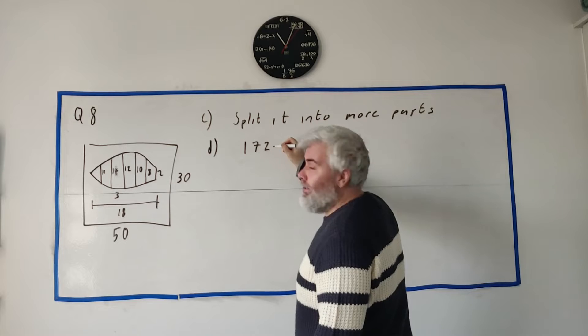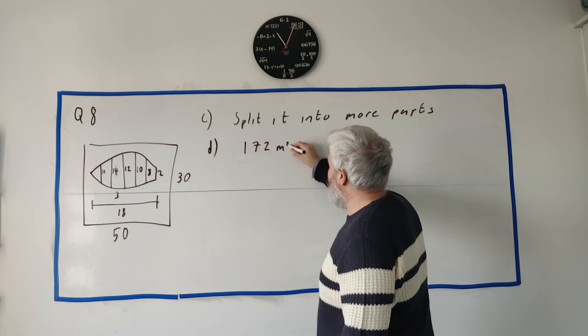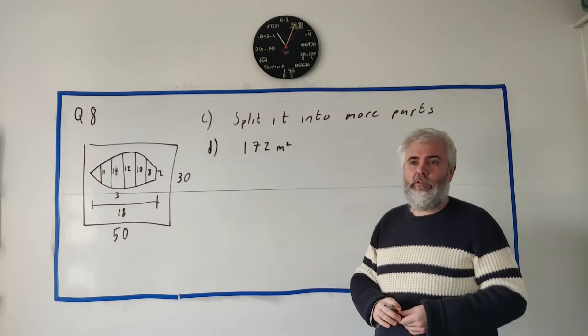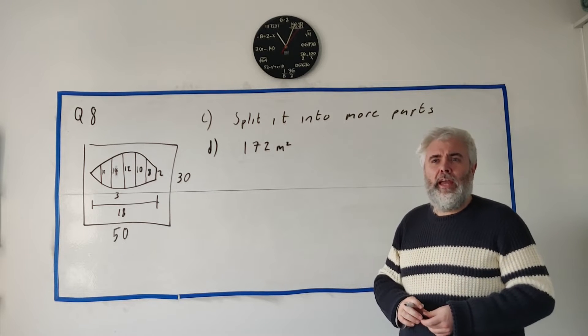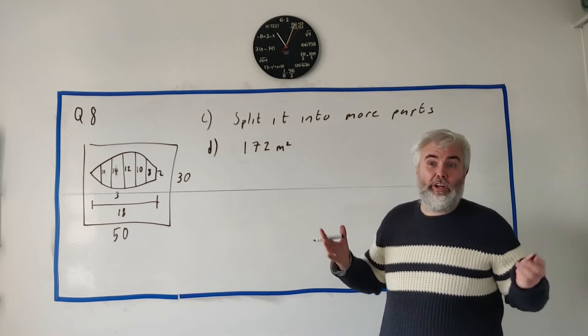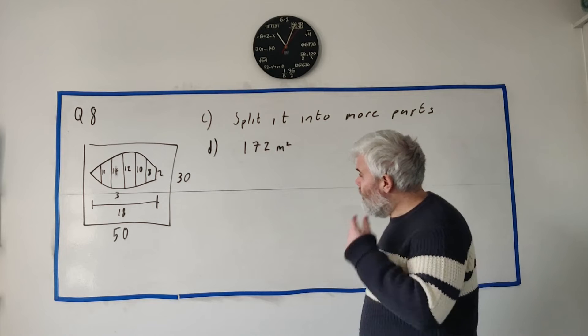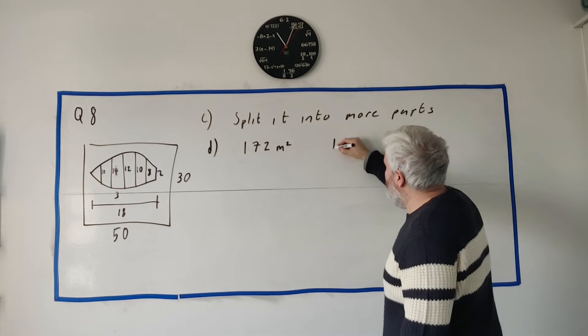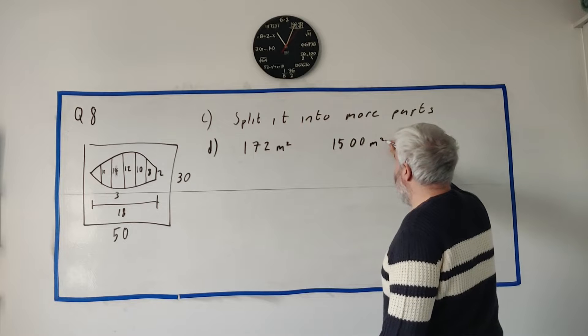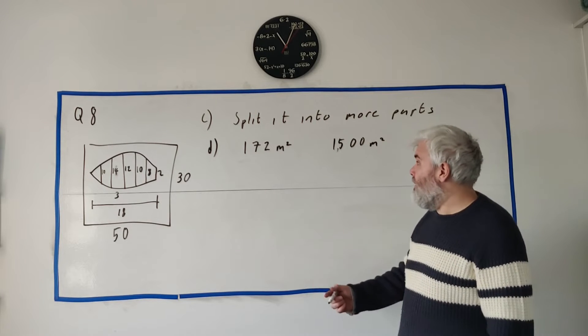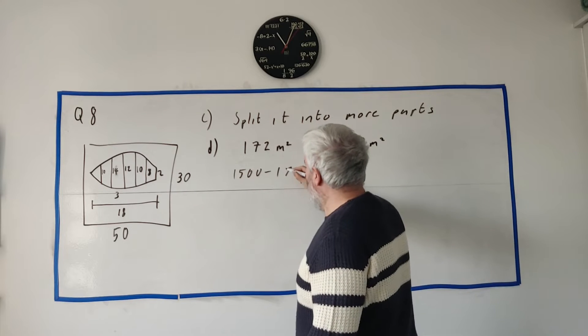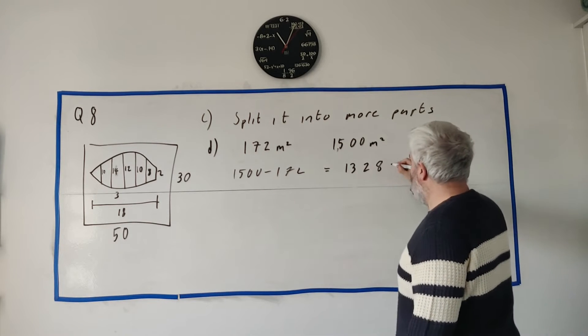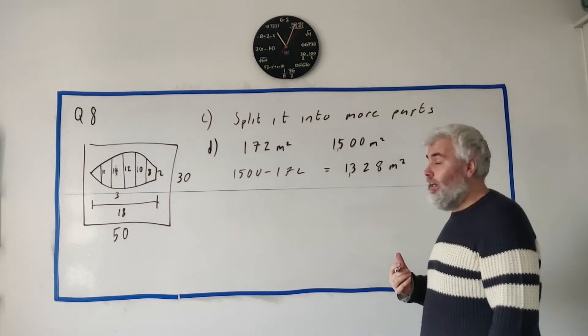On to part D. In the previous part we estimated that the area of the pond was 165, but now they tell us the actual answer is 172. They also tell us the rest of this garden is made up of grass and they want us to find out how much it would cost to resow the grass. First we need to know how much grass we're dealing with. From part A we know the total area was 1500 meters squared, so the grass area is 1500 minus 172, which equals 1328 meters squared.